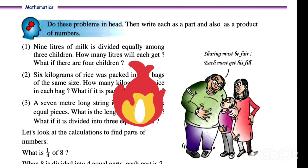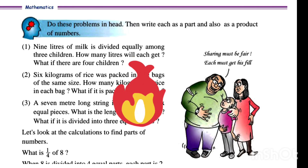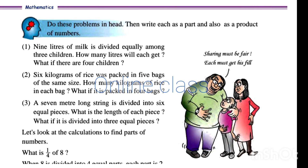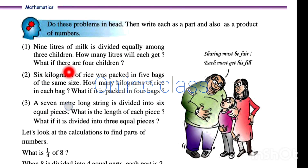We are going to talk about page number 28. Here are three groups. We want to talk about three groups: 9 and 25 liters of milk, divided among three children. That is equal to three of them. How many liters will we get? What if there are four children?